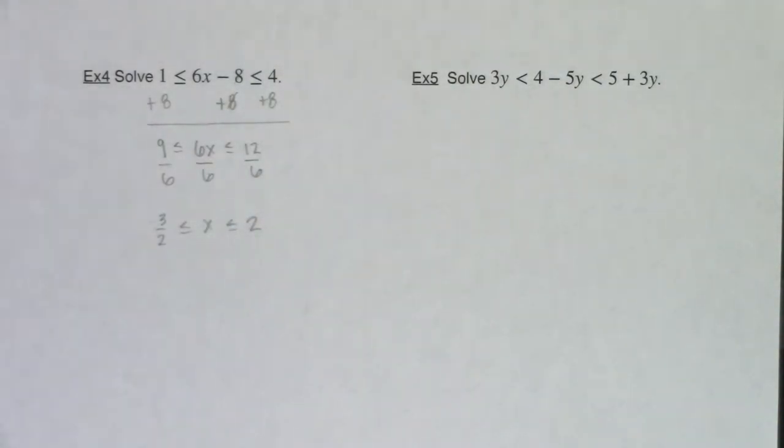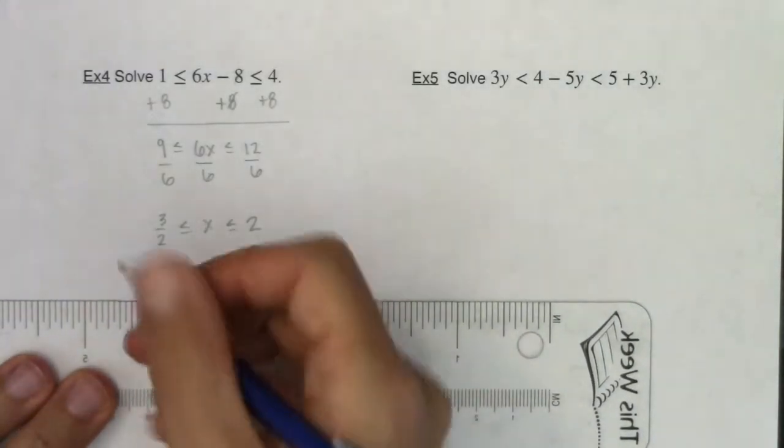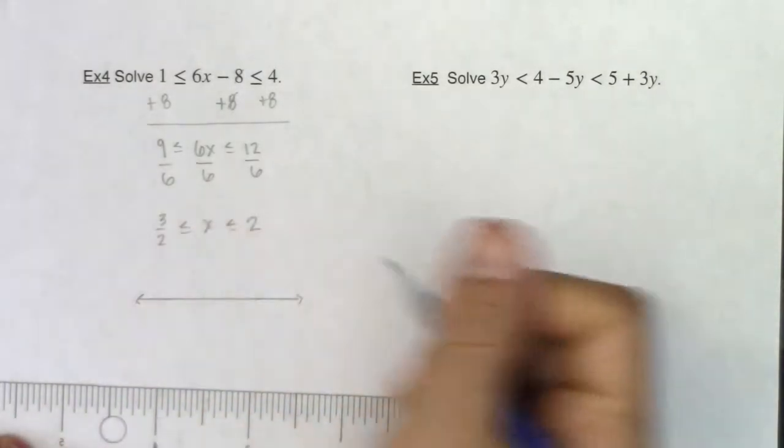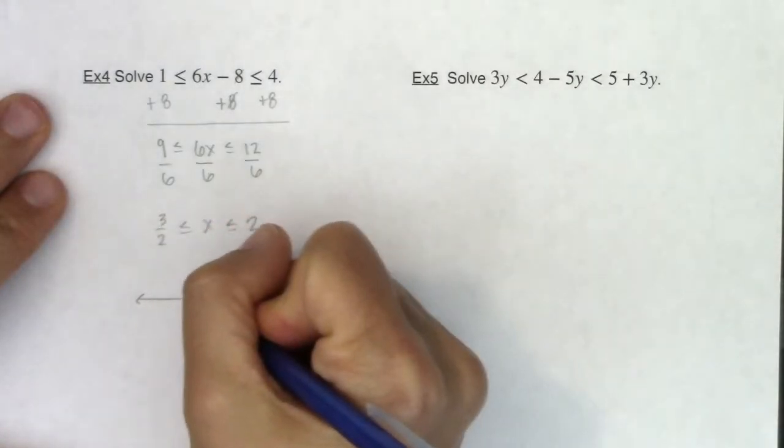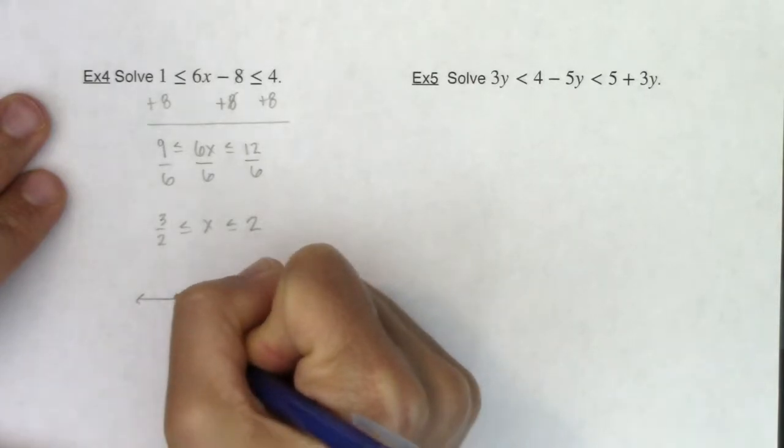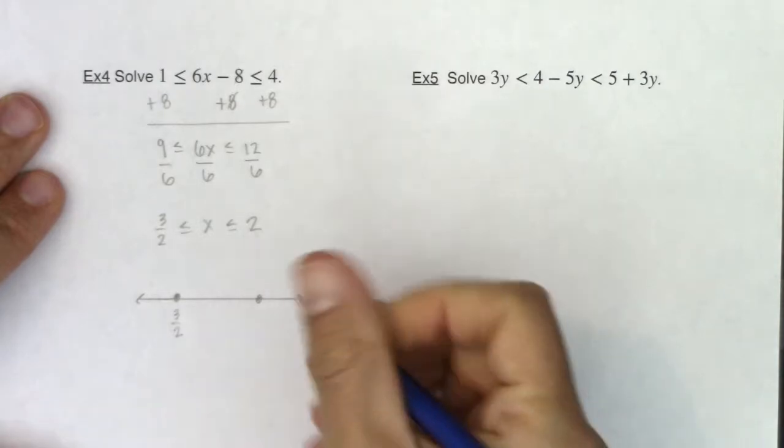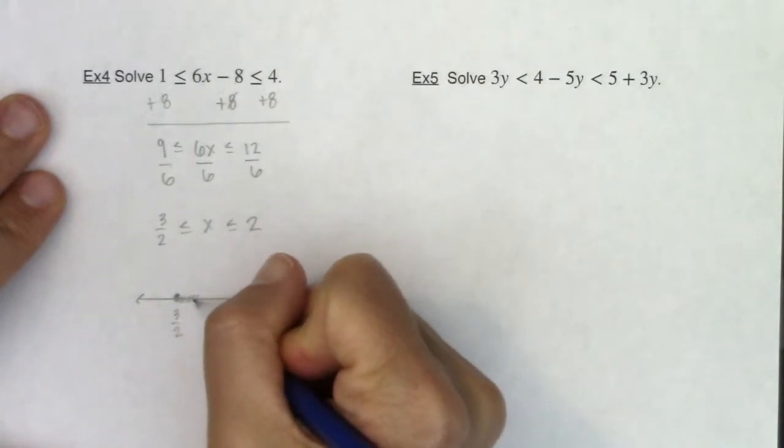Just for practice, let's write this up on the number line. If I was going to write this up on the number line, I don't actually need to make my number line super long this time, which is great. So we would go from positive three halves.